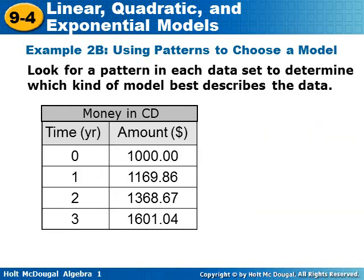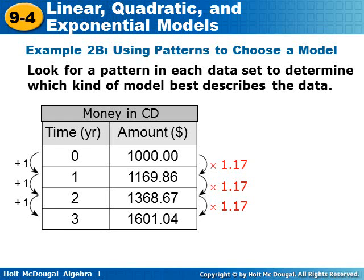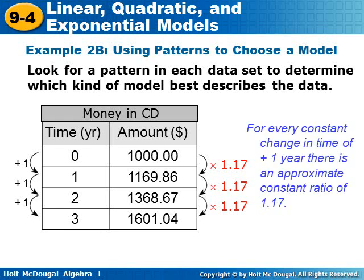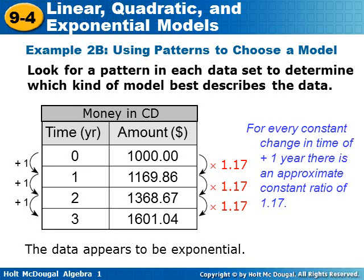Look for a pattern in each set of data to determine which kind of model best describes it. You check that x is changing by plus one every time, and then you can see that the y values are multiplied by 1.17 each time — you find that by dividing each term by its previous term. For every constant change in time of plus one year, there's an approximate constant ratio of 1.17, so the data appears to be exponential.